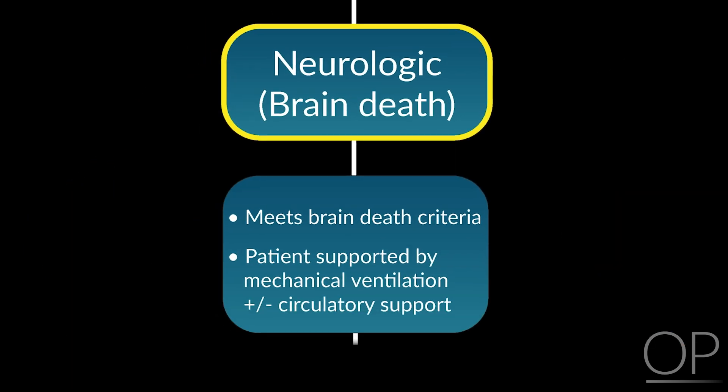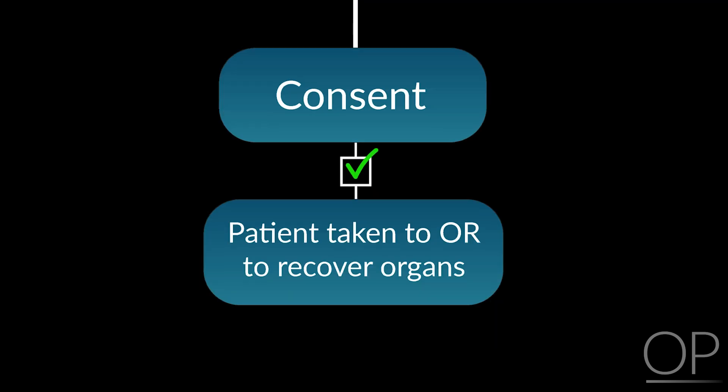Donation after neurologic determination of death occurs following the diagnosis of brain death, which is made using strict clinical criteria. The patient is declared dead but remains supported by a mechanical ventilator and possibly cardiac medications or ECMO in an intensive care unit. The family is approached for consent, and if they consent, arrangements are made for the body to be taken to the operating room for organ recovery.